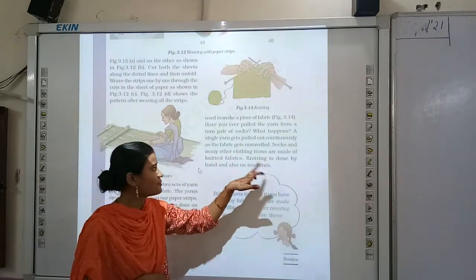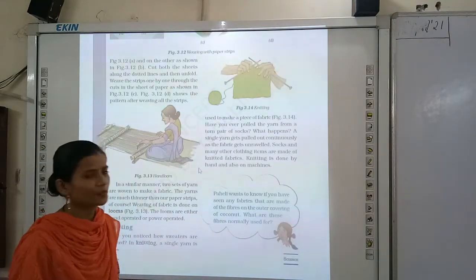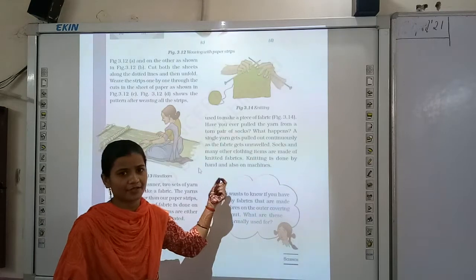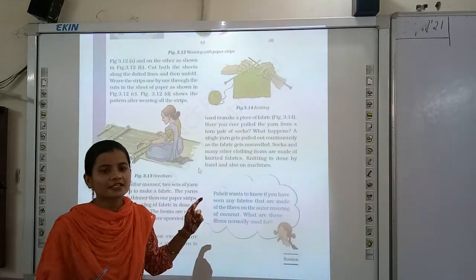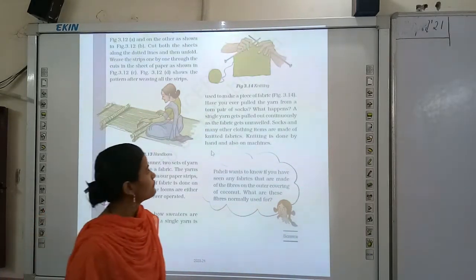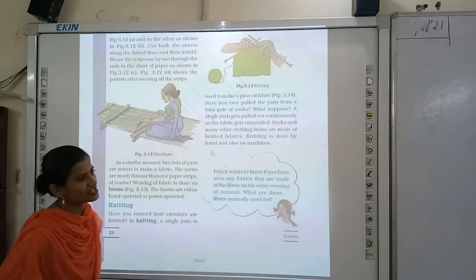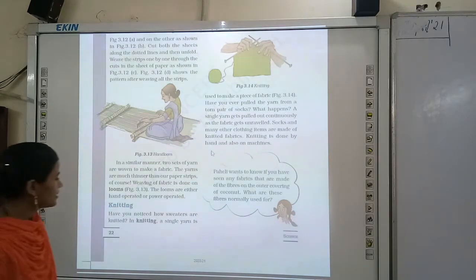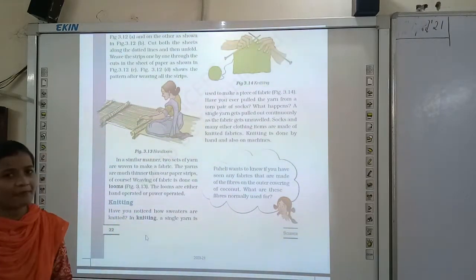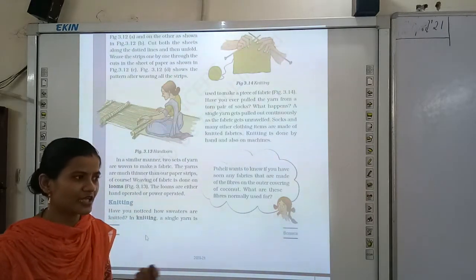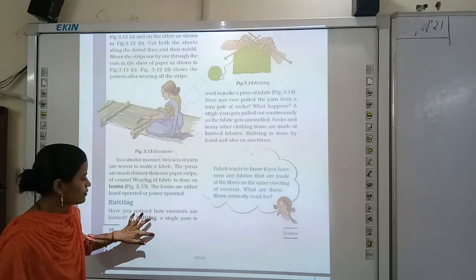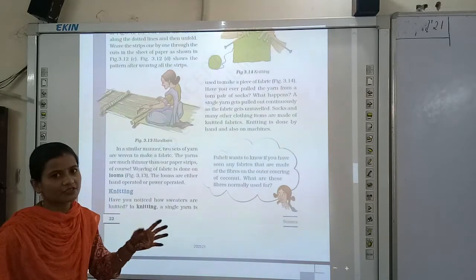Socks and many other clothing items are made up of knitted fabric. Knitted fabric means they are made up of a single set of yarns. Knitting is done by hand and also on machine. In knitting, a single yarn is used to make a fabric, and if you pull a single yarn from a pair of socks, the fabric gets unwrapped.